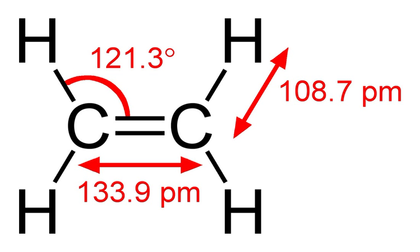Ethylene is dimerized by hydrovinylation to give n-butenes using processes licensed by Lummis or IFP. The Lummis process produces mixed n-butenes while the IFP process produces 1-butene. 1-Butene is used as a comonomer in the production of certain kinds of polyethylene.